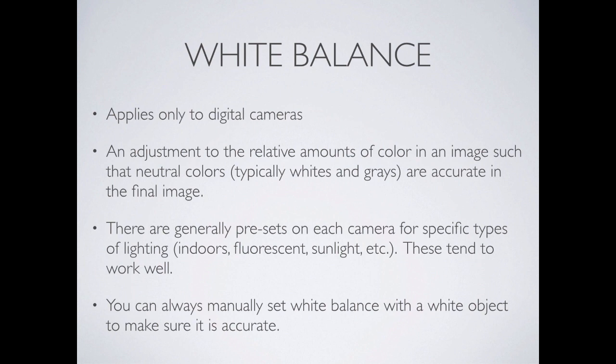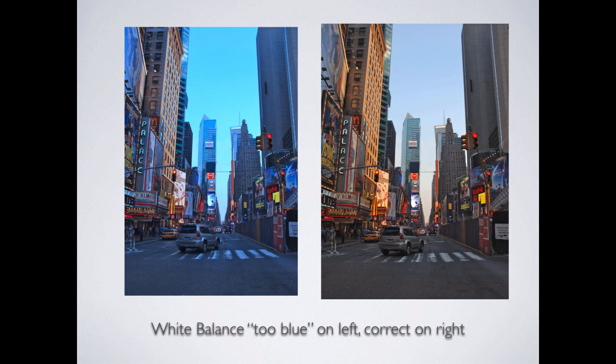White balance is really only relevant in the world of digital cameras. It basically means the color in your photo might be skewed one direction or another. The easiest way to show this is with an example: you take a picture and it looks like it's underwater because it's all blue — the colors are just wrong. This is a white balance issue; the camera thinks white is more blue than it really is. Here's a photo of Times Square in New York that's too blue, and this is the correct exposure. The good news is it's a really easy adjustment after the fact in Photoshop.